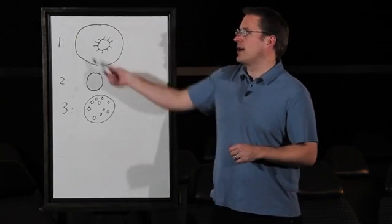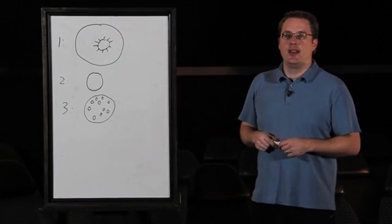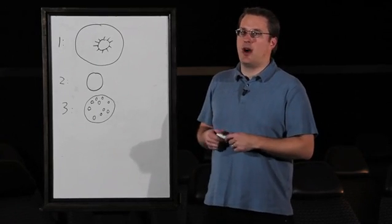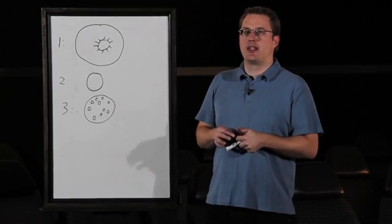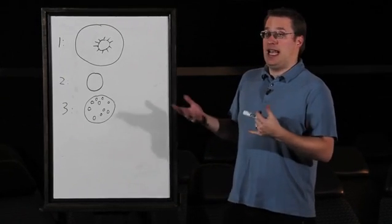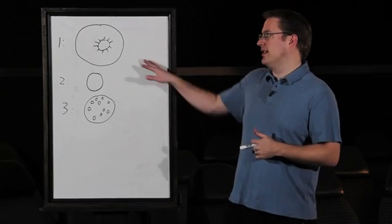Rule number one is it has to go around the sun. It has to orbit the sun. This eliminates all your moons, which are going around the planets. Otherwise, you have very large moons. Some of the moons are larger than Pluto. Some of the moons are actually larger than Mercury. And so if you just say anything that's going around anything, you're going to have a lot of planets. This eliminates the moon.